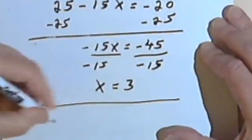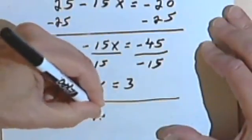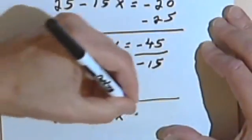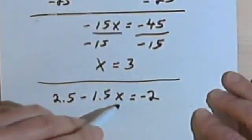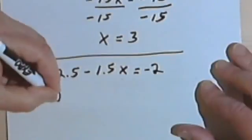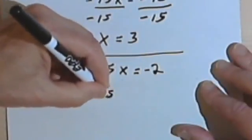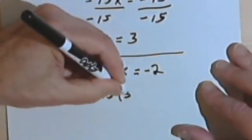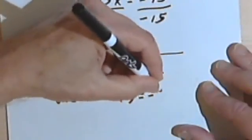Let's go back to the original. So 2.5 minus 1.5x equals negative 2. Let's plug in a 3 over here where we have the x. So 2.5 minus 1.5 times 3 is negative 2.